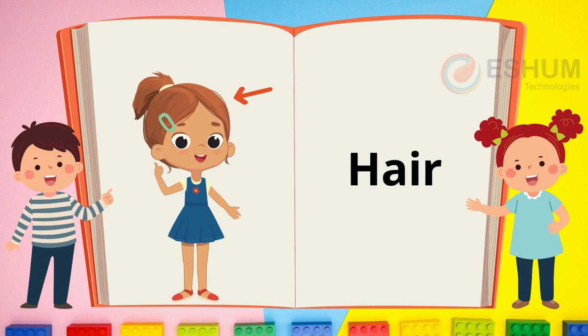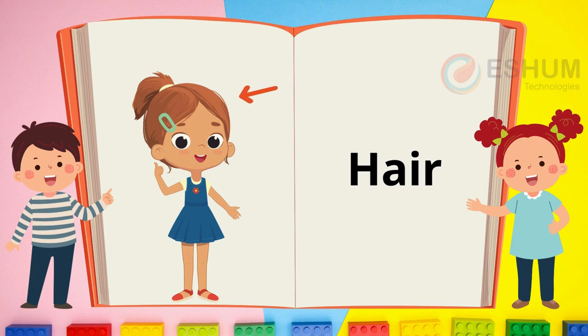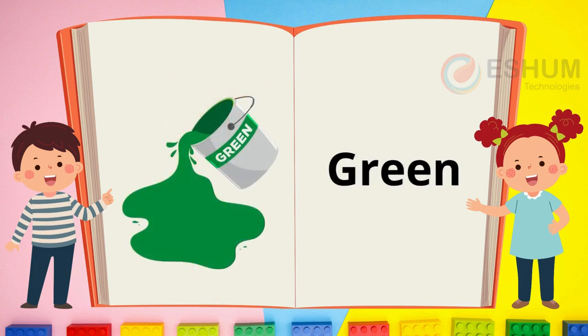Hair. In the picture an arrow is pointing to the girl's hair. It is brown. She wears a blue hairpin in her hair. What color is your hair?